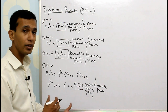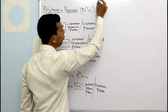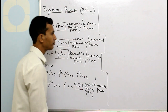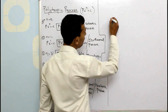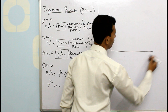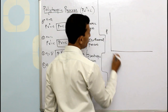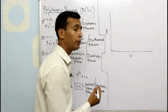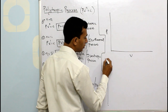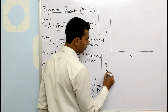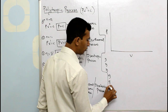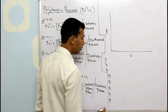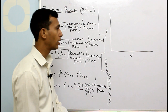Now how are these things represented on a PV diagram? Let us try to understand. I have a PV diagram here with pressure on the y-axis and volume on the x-axis. I am trying to represent each and every process. There are eight processes in total — let us go through them one by one.